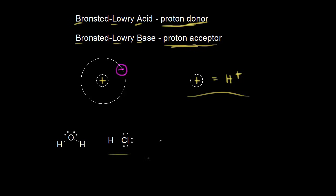Let's look at the dot structure for HCl and focus on that covalent bond. One of those electrons came from the chlorine, and one came from the hydrogen. HCl is going to donate a proton to water. A lone pair of electrons on the oxygen is going to pick up this proton, and the electron in magenta is left behind, so these two electrons come off onto the chlorine.